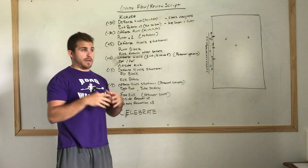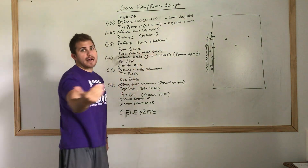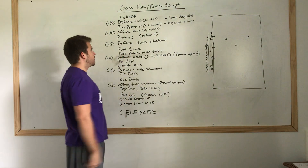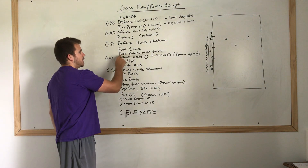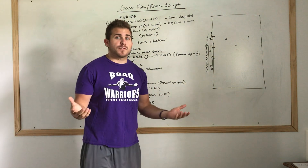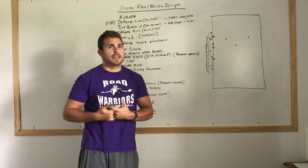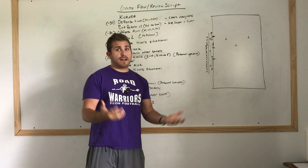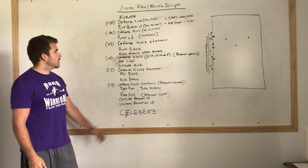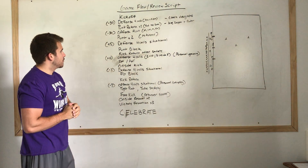Then we'll run our punt block because we have the offense backed up. We'll get a rep of our punt block. Let's say we blocked the ball and got a safety from blocking the punt — we're going to practice setting up kick return after the safety. I know some of you may not think that's important, but if it ever happens in a game, we practice it so our kids aren't wondering what to do or where to line up. We'll field it and run a return, whatever you call for return.